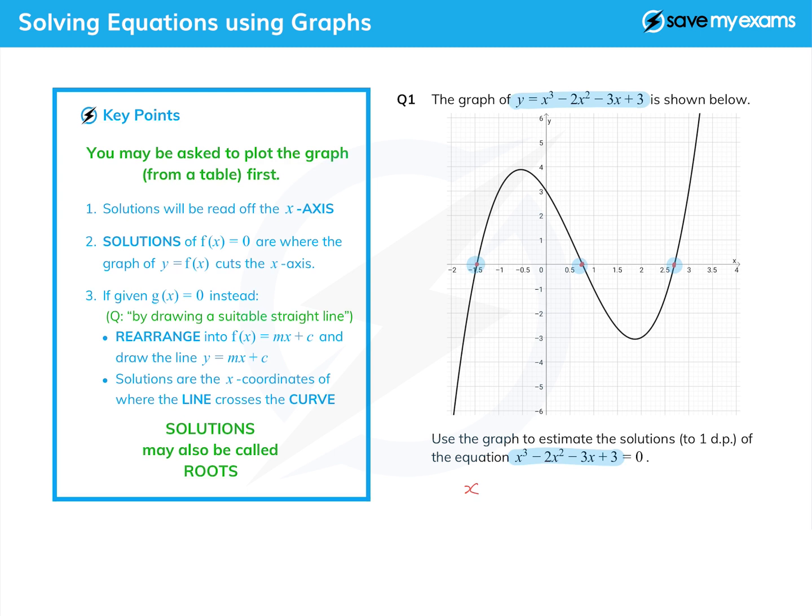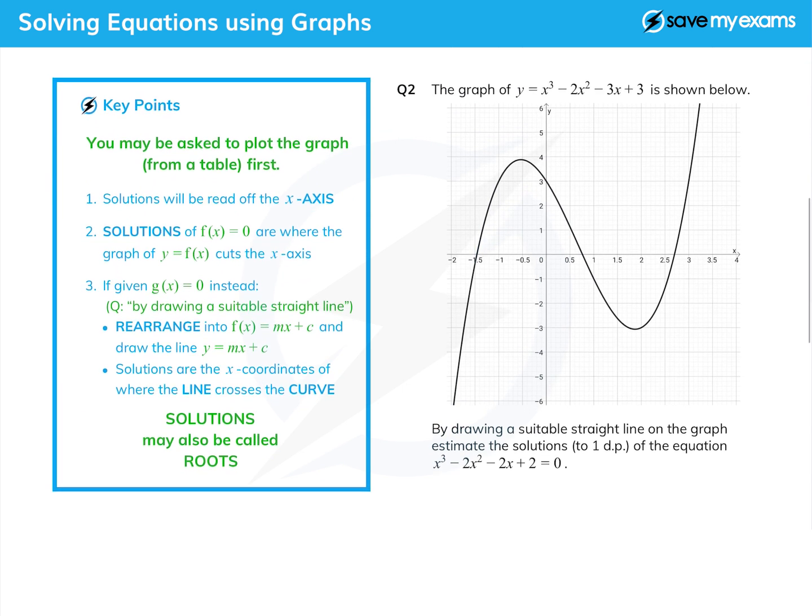And we can simply, and it really is simple, read off. It's asked me to do it to one decimal place and you can see you just have to decide whether it's closer to minus 1.4 or minus 1.5. I think that's minus 1.4, the left-hand point. The middle one is x equals 0.8, slightly closer to that than 0.7, and the next one is x equals 2.7.